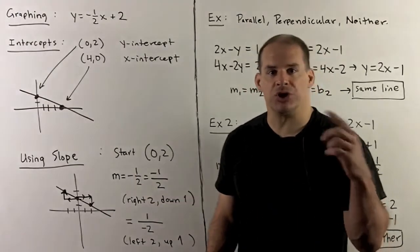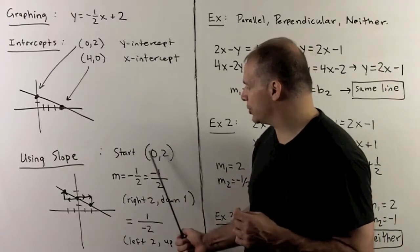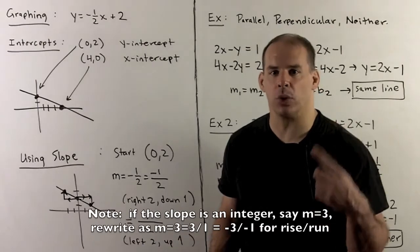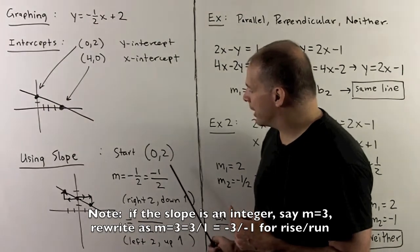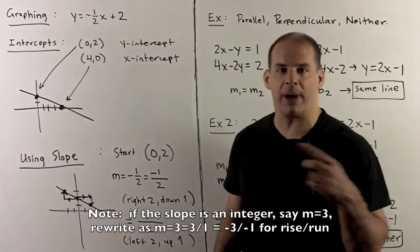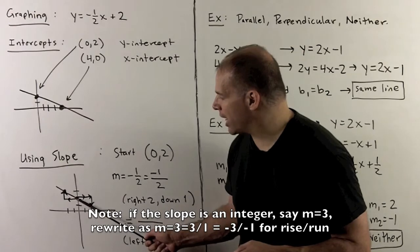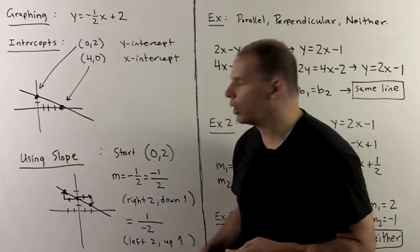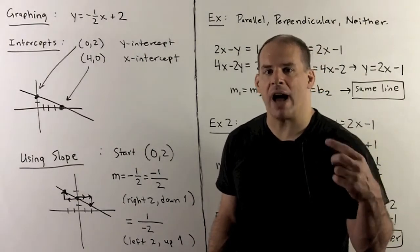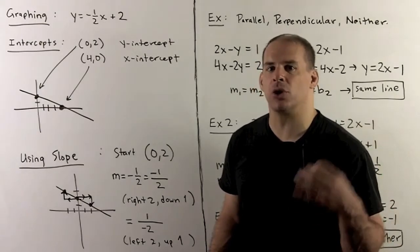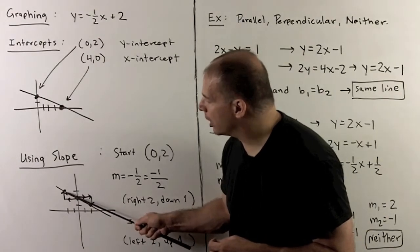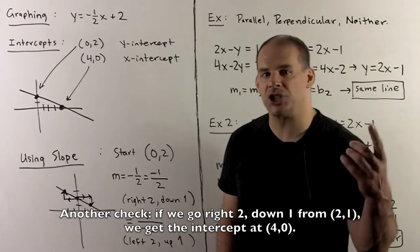To graph using just the slope and y-intercept: plot the y-intercept at (0, 2). The slope is minus one-half, which I read as minus 1 over 2. Rise is minus 1 (down 1), run is 2 (right 2). So going right by 2 and down 1 from the intercept gives one point. Alternatively, reading it as 1 over minus 2: rise is 1 (up 1), run is minus 2 (left 2). Going left 2 and up 1 gives another point. Connecting the dots, all three points lie on the same line, which checks our work.